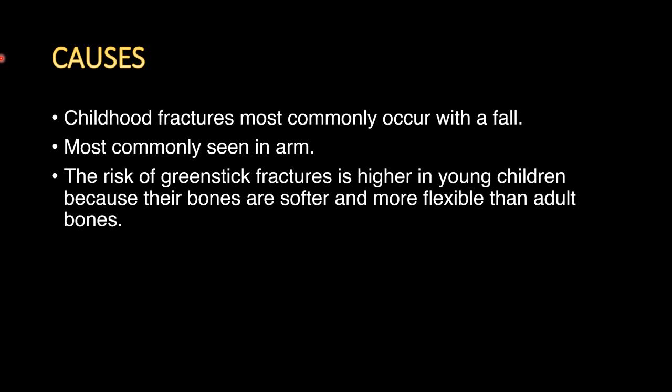Ab hum causes ki baat karte hain — woh kaun se reasons hain jinki wajah se fracture ho sakta hai. Toh chote bacche hain, toh wo kabhi khel rahe the, gir gaye — toh unko yeh fracture zyada tar khelne ke dauraan fall hone se, koi accident, injury ki wajah se ho sakta hai. Most commonly yeh arm mein hota hai, kyunki jab hum girte hain toh hum hamesha apne haath ko aage kar dete hain taaki humari body mein zyada chot na lage. So yeh fracture zyada kar arm mein dekhne ko milta hai, aur green stick fracture ka risk higher hota hai children mein, as we have already seen that their bones are more softer and flexible.